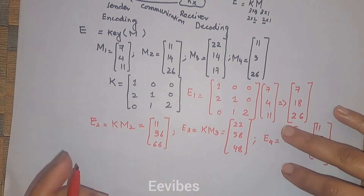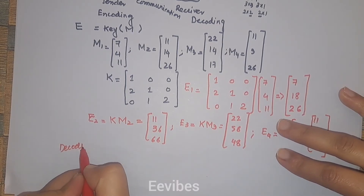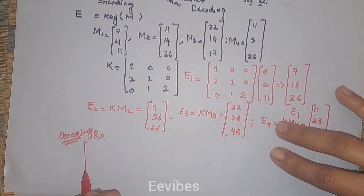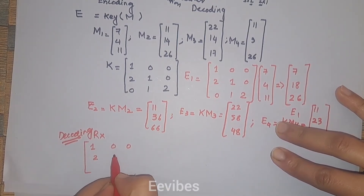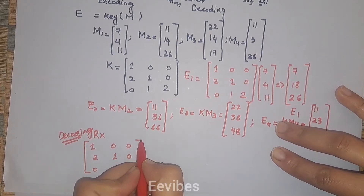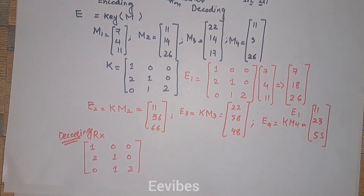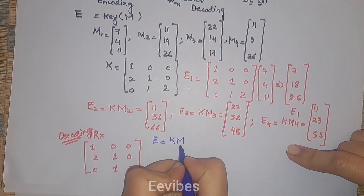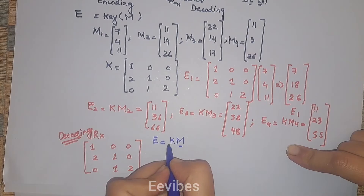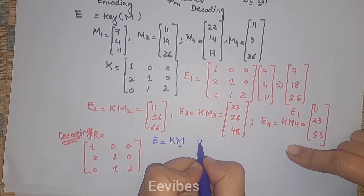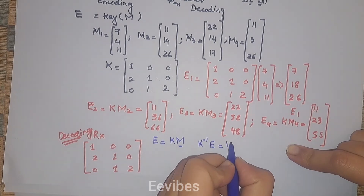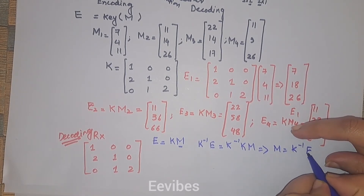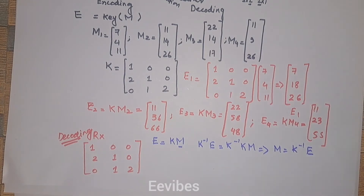After encoding, the next step is decoding, which is done at the receiving side using the key. The key must be forwarded to the receiver, along with the algorithm. Since the algorithm is e = k × m, to retrieve m we eliminate k by left-multiplying both sides by k-inverse: k⁻¹ × e = k⁻¹ × k × m, which simplifies to m = k⁻¹ × e.